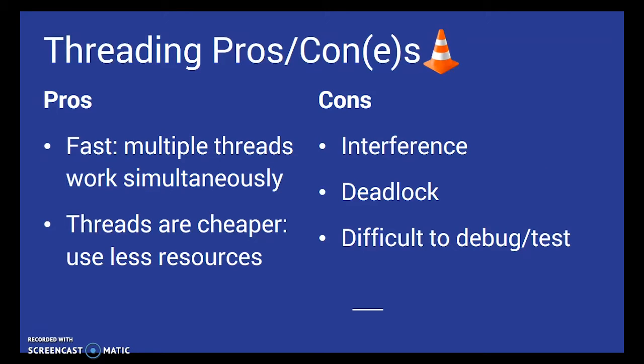So some pros of multithreading is that it's fast, multiple threads within a process can share the same data space, and therefore communicate with each other more easily than if they were separate processes.